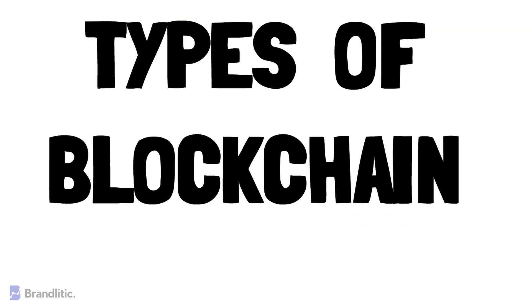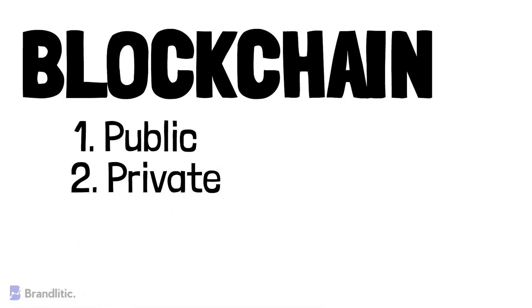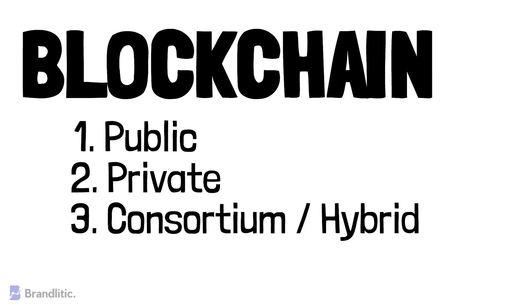So broadly speaking, blockchain can be classified into three categories: 1. Public blockchain, 2. Private blockchain, 3. Consortium or hybrid blockchain.